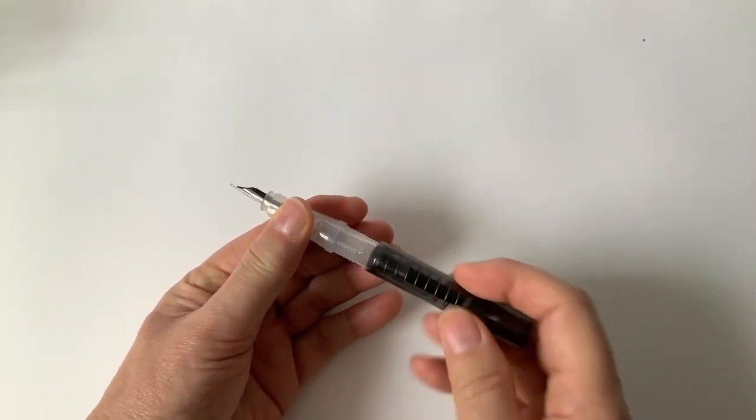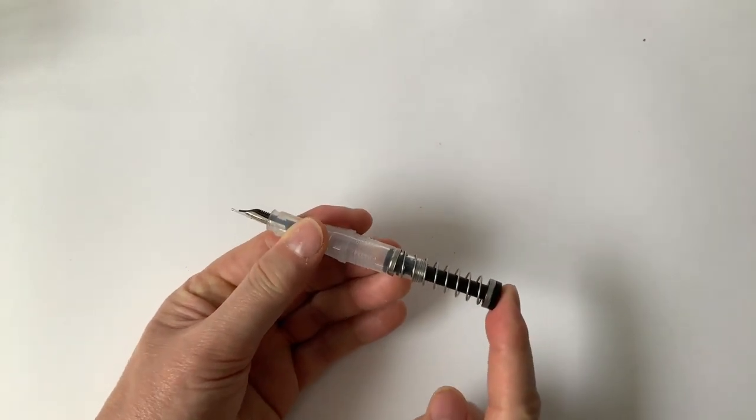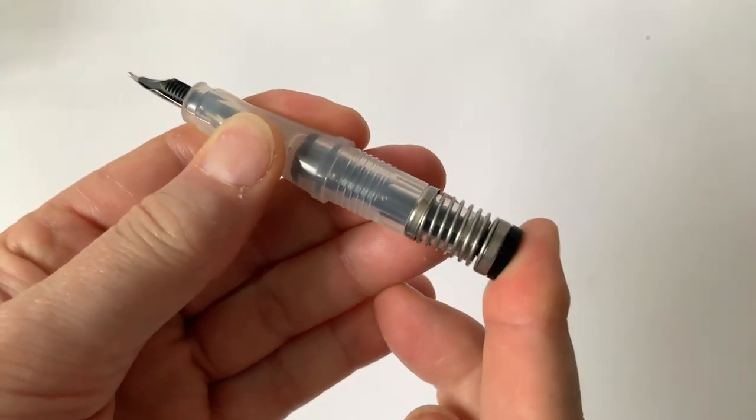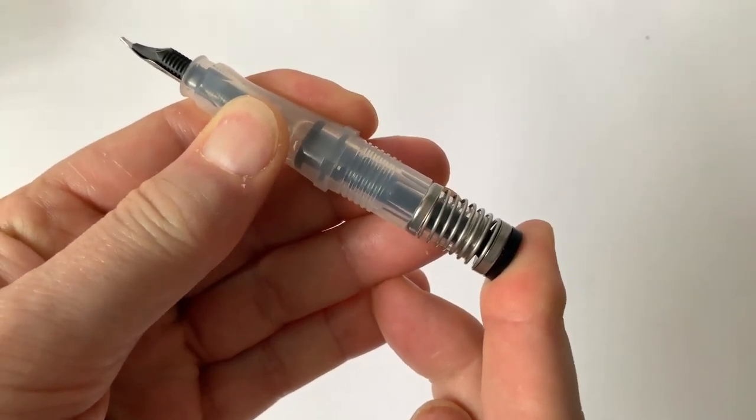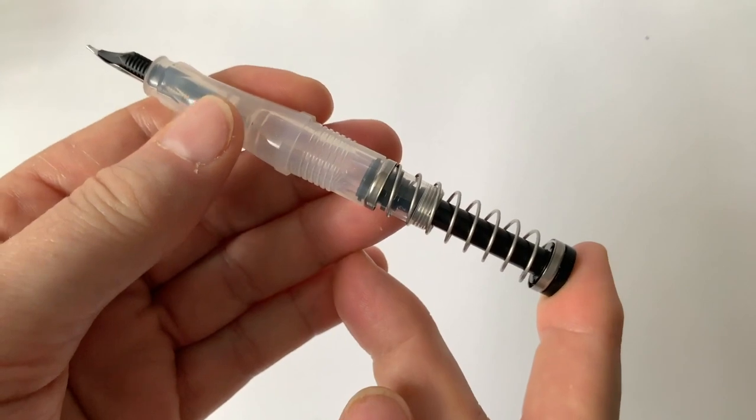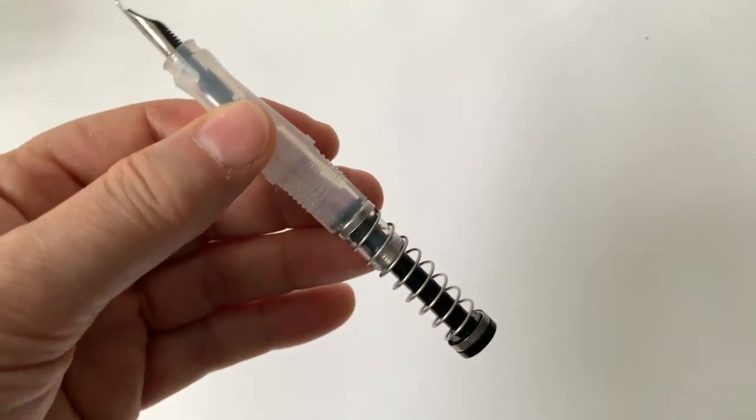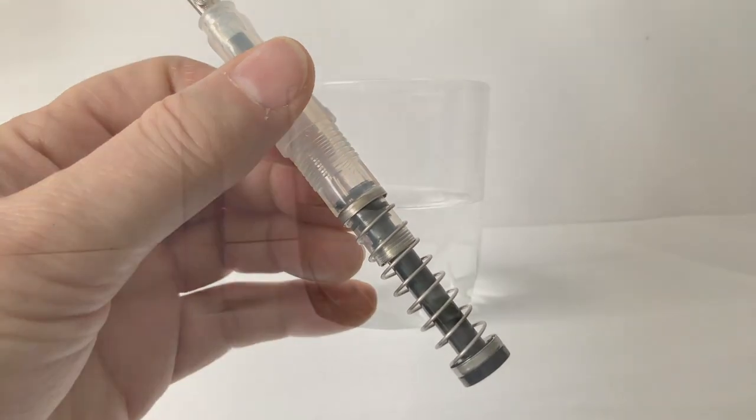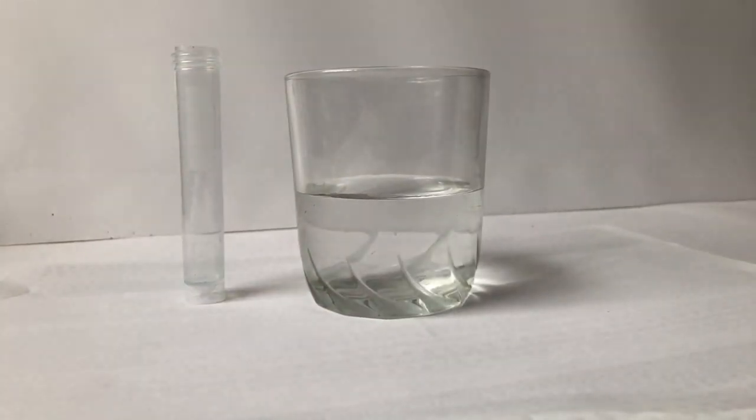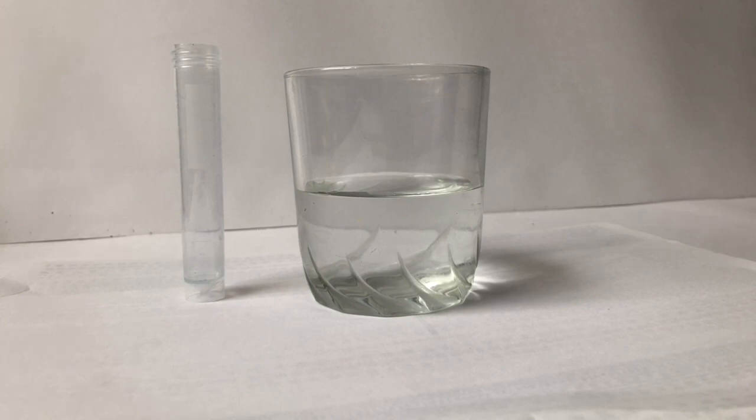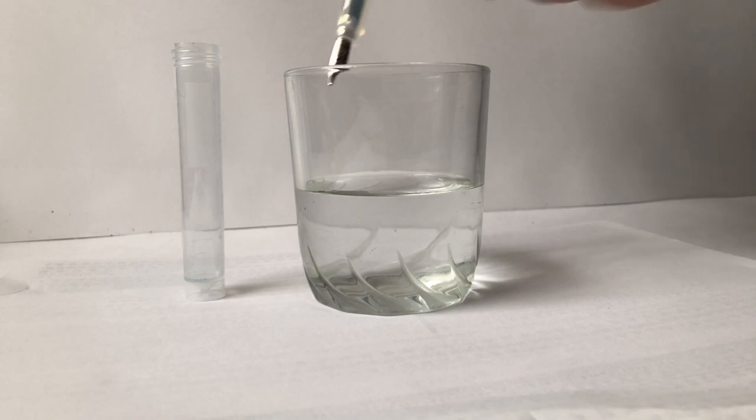No i teraz zobaczmy tutaj ten mechanizm w środku, który działa o tak. Naciskamy, tłok się przesuwa i wytwarzając podciśnienie zaciąga tutaj sobie atrament do środka. Widać to dość duża pojemność może być. Zaraz nie omieszkam ją przetestować. Do testu potrzebna jest woda, miarka, no i oczywiście pióro Twisby.